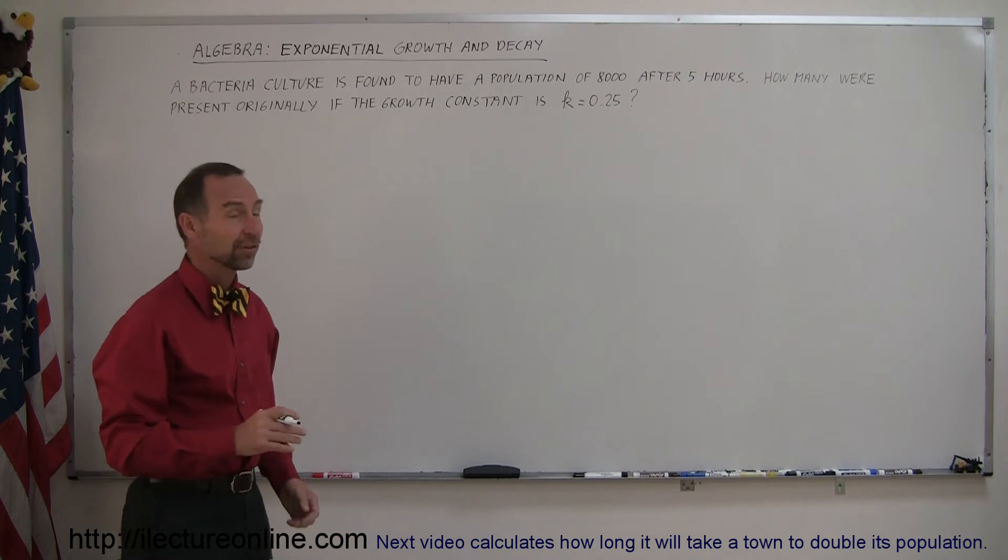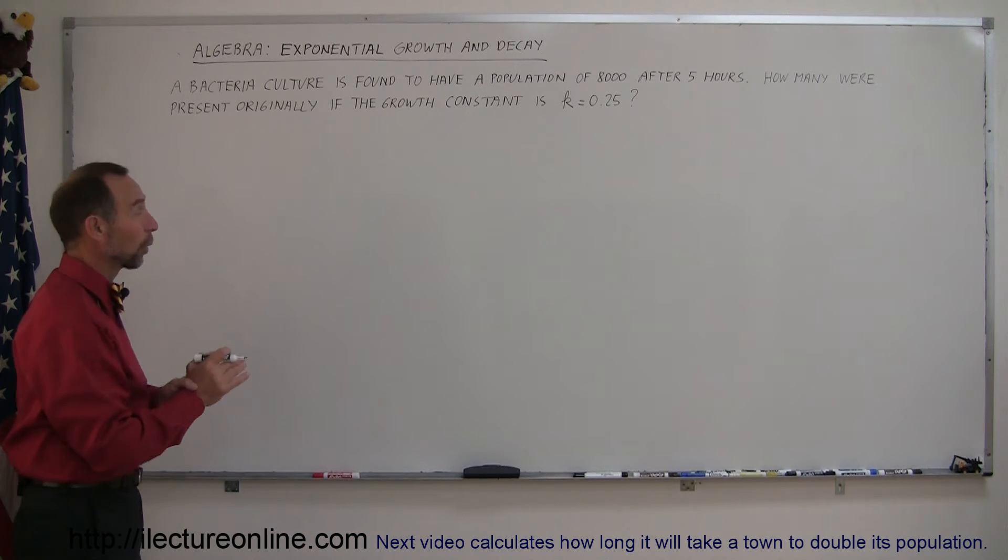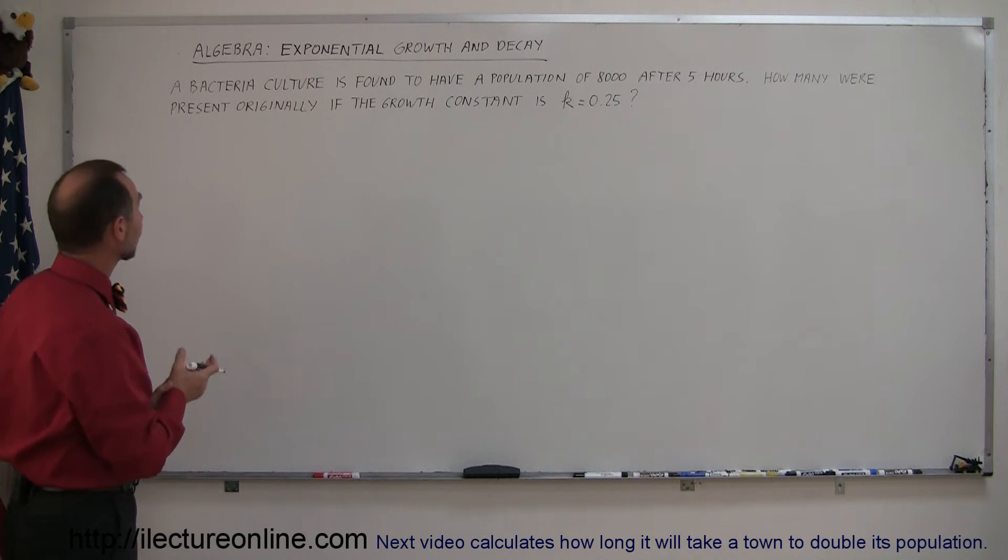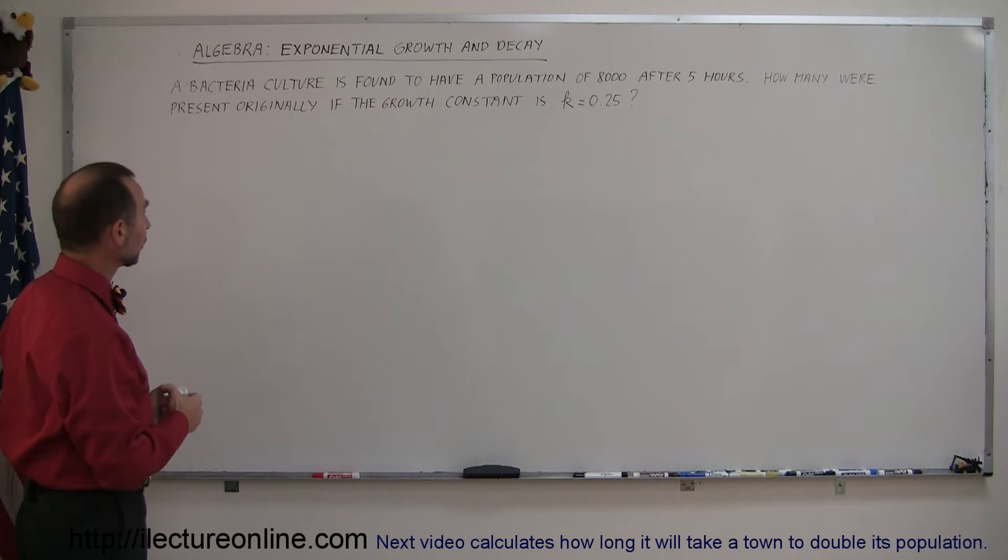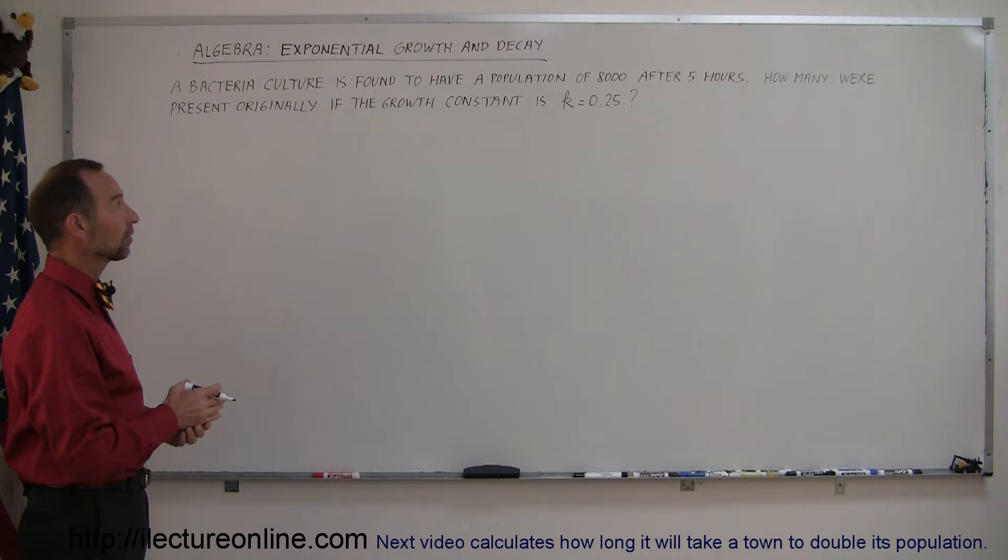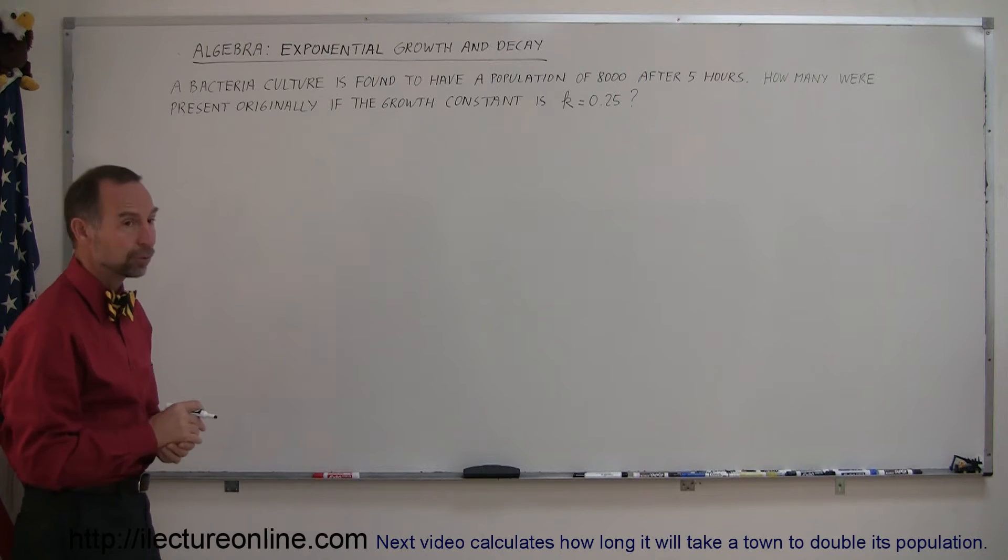Welcome to iLecture Online and here's another example of how to work with exponential growth and decay. So let's read our example. It says a bacteria culture is found to have a population of 8,000 after five hours. How many were present originally if the growth constant is k equal to 0.25?